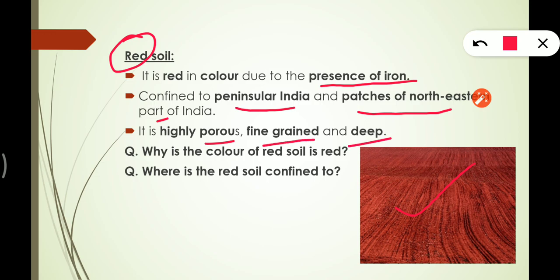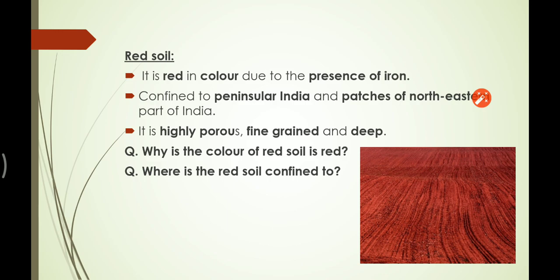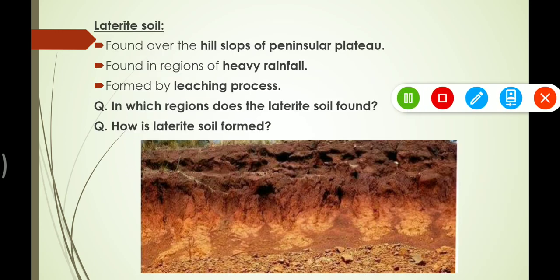Red soil is highly porous, fine-grained, and deep. Key questions: why is the color of red soil red? — due to the presence of iron. Where is red soil confined to? — peninsular India and patches of the north-eastern part of India.